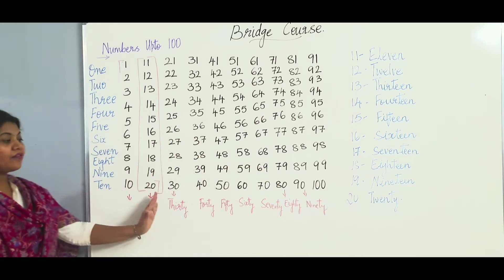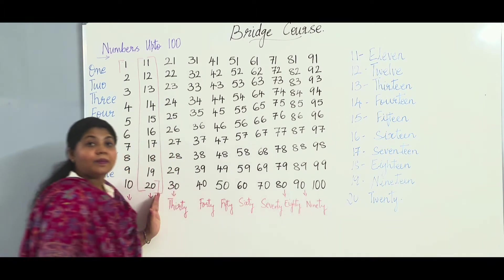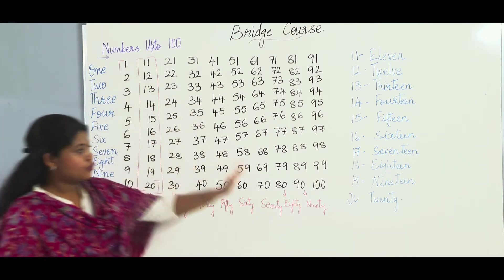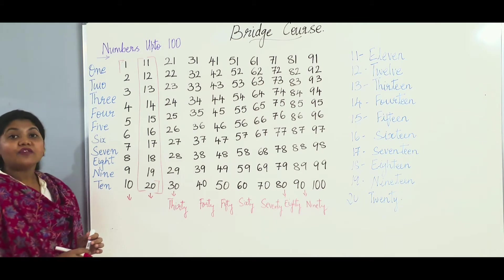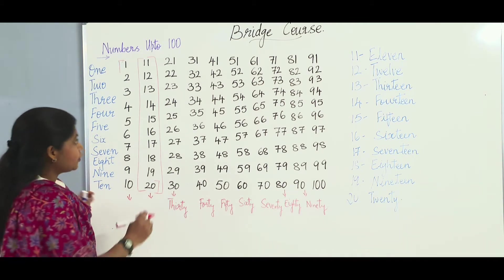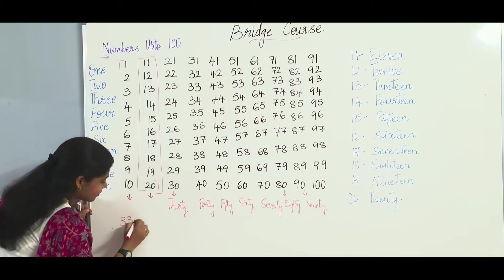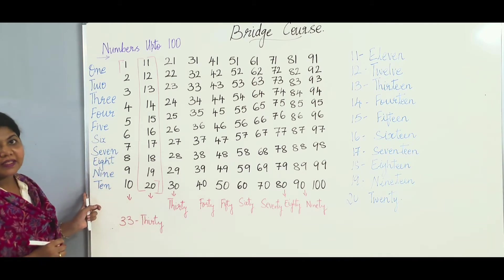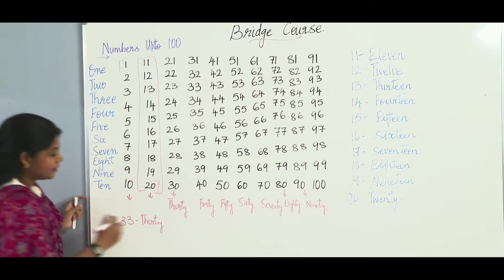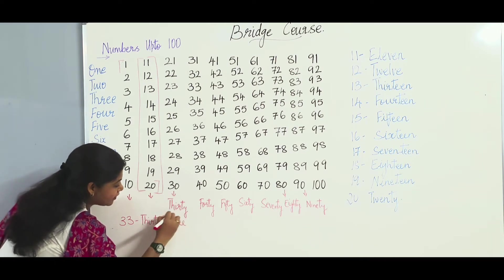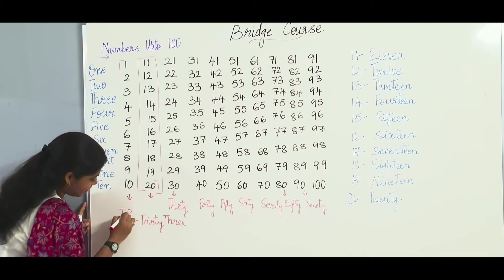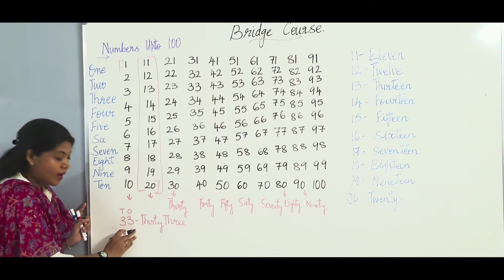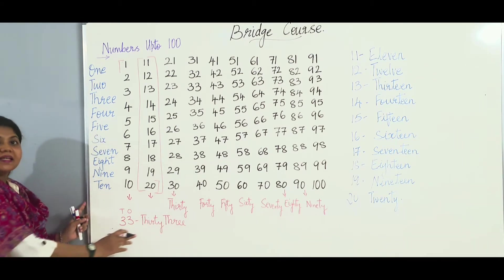Now if you have learned these names, it will be easy for you to write the number name of any given digit from 1 to 99. Let me show you how. If you have to write 33, you write T-H-I-R-T-Y for the 10's place and T-H-R-E-E for the 1's place. So 3 tens make 30 and 3 ones make 3, giving us 33.